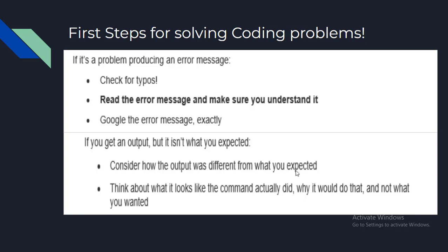As you get further in this course and using R, you may run into coding problems and errors. Coding problems generally fall into two categories: your command produces no data and spits out an error message, or your command produces an output but it is not what you wanted. These two problems have different strategies. If it's a problem producing an error message, check for typos, read the error message carefully, make sure you understand it, and google the error message exactly.